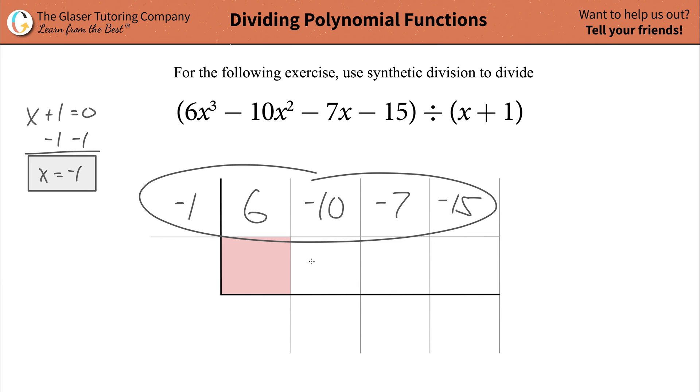Now, we have the top row set up. Now, what we're going to do is we're going to follow a series of steps, aka sometimes that's called an algorithm, in order to find the coefficients and possibly the remainder of our quotient. First thing, take the first term, whatever it is, and just drop it straight down. You're just going to take it, drop it straight down, going to be a 6.